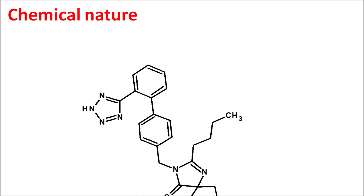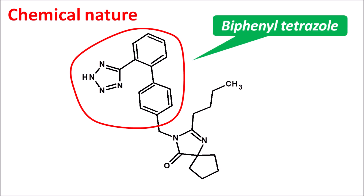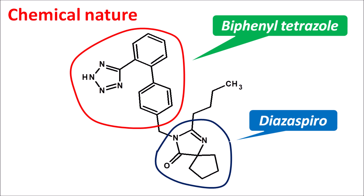First let us see the chemical nature of this drug. This is the structure of Irbesartan. We can observe a biphenyl ring system attached with a tetrazole — so biphenyl tetrazole is present in Irbesartan. Similarly, we can observe a spiro compound here, which is a diazospiro compound. So Irbesartan is a biphenyl tetrazole and diazospiro derivative.